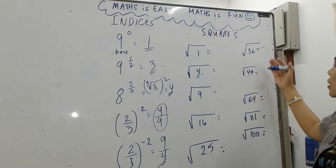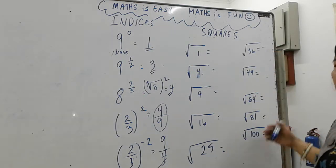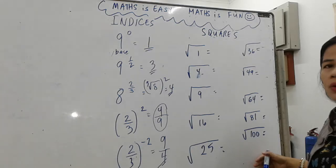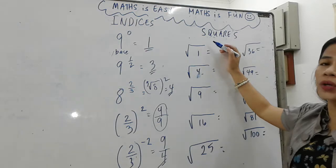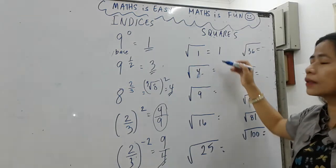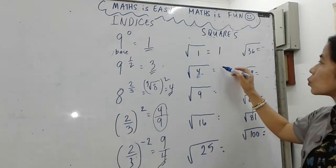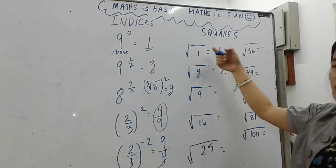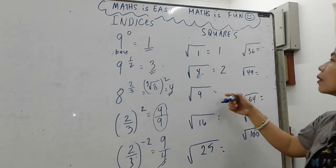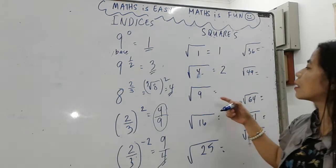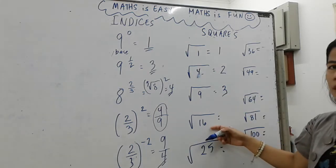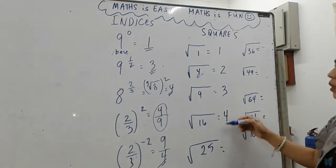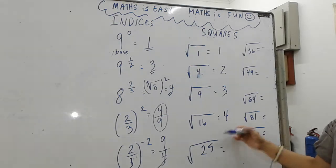The square root of one is one, the square root of four is two because one times one is one, so its square root is one. The square root of nine is three, and the square root of sixteen is four because four times four is sixteen.